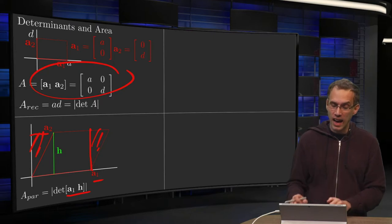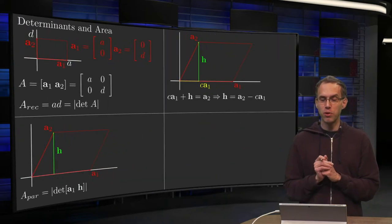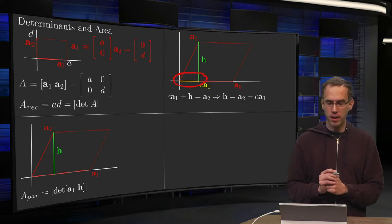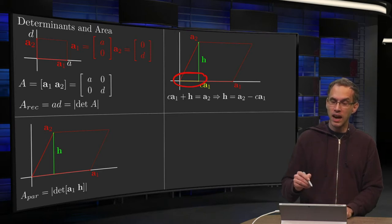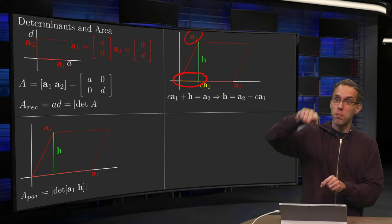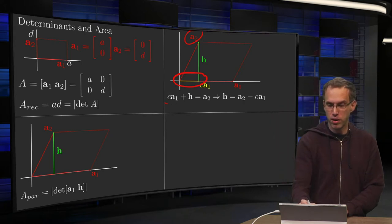Well, actually you can do a small trick. We say we can put a vector c times a₁ over here. And now you see our vector a₂ equals c times a₁ plus h.